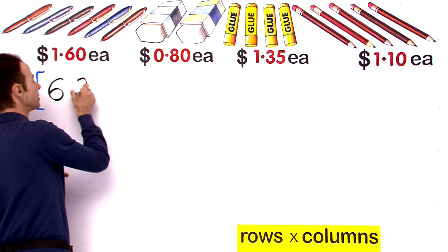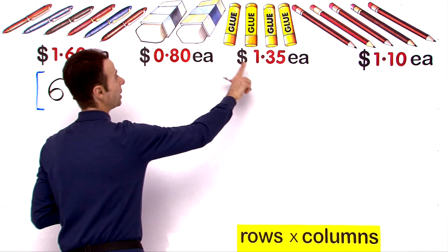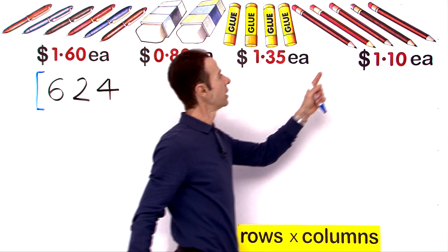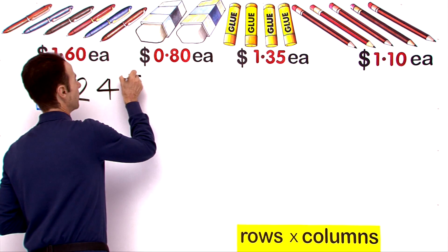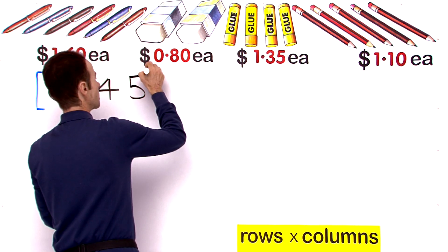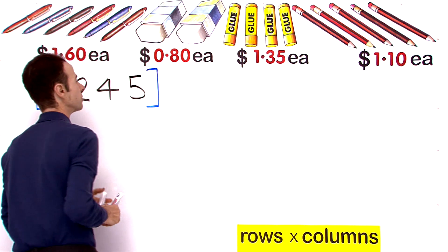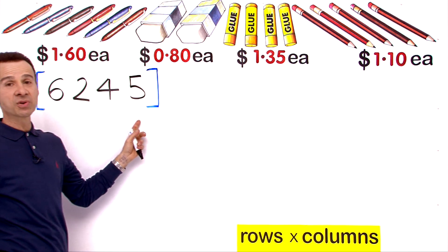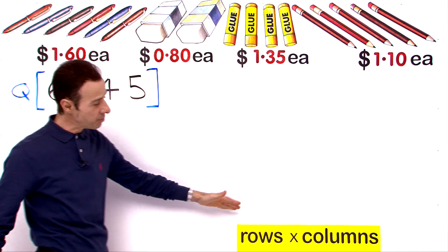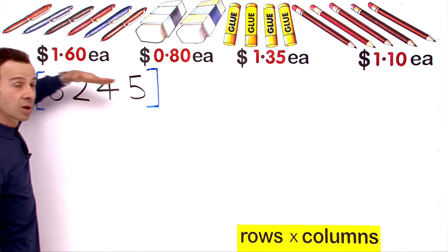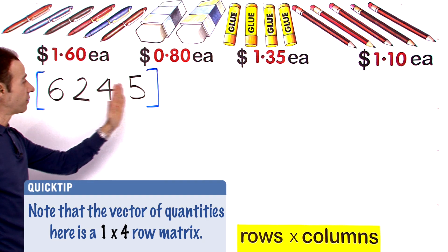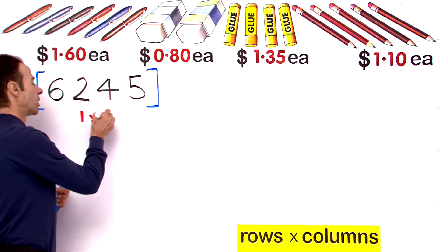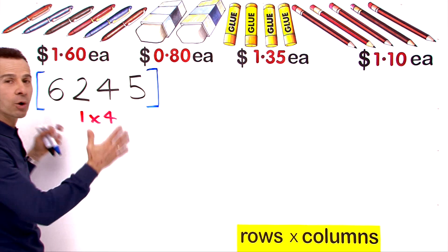How many erasers? We have 2 erasers, 4 glue sticks, and finally 5 pencils. So that is our quantity matrix. It has 1 row by 4 columns — so it is a 1 by 4 matrix. That is our quantity matrix.